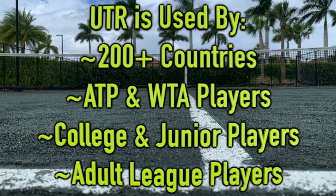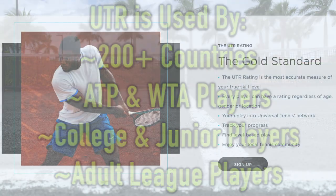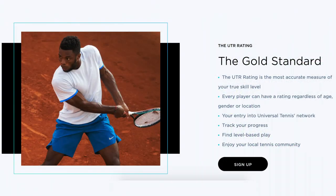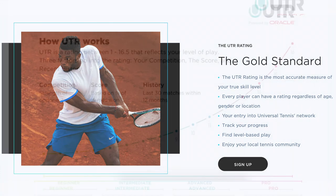Adult leagues also use UTR, so it's very popular all around the world. UTR is a great way to track your progress because your rating is constantly changing as you improve. It's a cool way to enjoy your local tennis community and find other players of a similar skill level to you, which can be super helpful. It's been around since its inception in 2008.